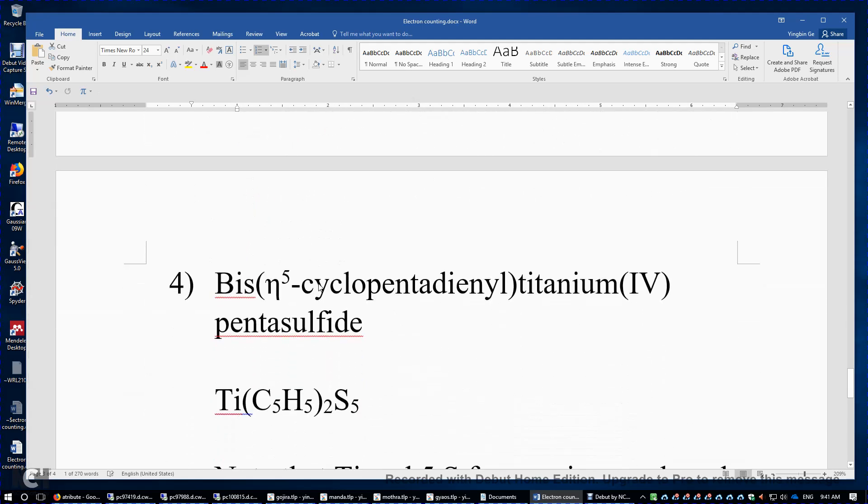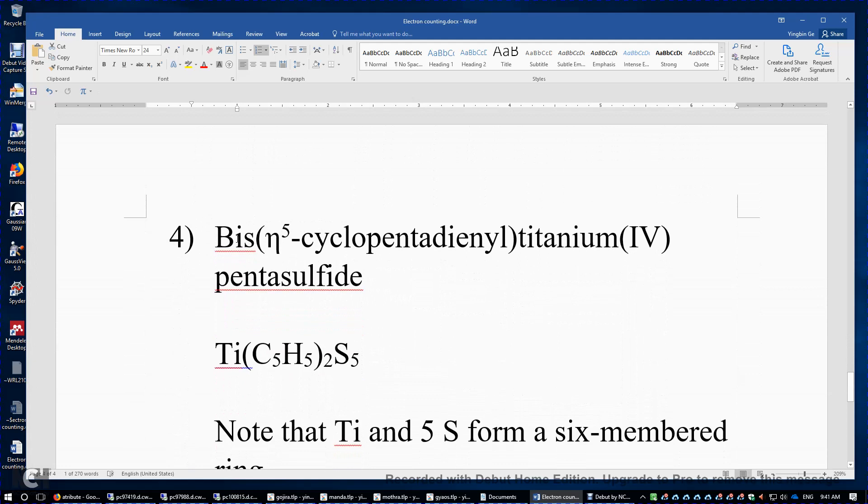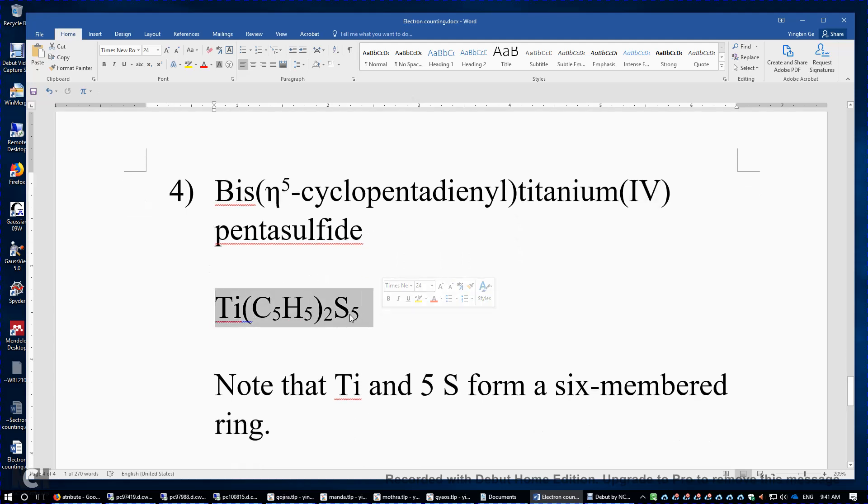And then finally, another example, bis eta-5 cyclopentadienyl titanium with oxidation number 4 pentasulfide. So this titanium and 5 sulfide atoms form a 6-membered ring. And this titanium is bonded to 2 sulfide atoms. The formula is this.